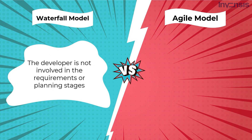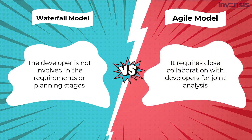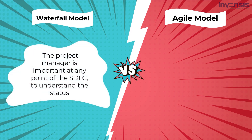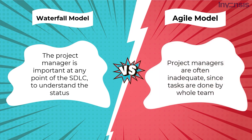The developer is not involved in the requirements or planning stages in a Waterfall model, and there are usually time delays between tests and coding. In the Agile model, it requires close collaboration with developers and joint analysis of specifications and planning. Since the process is straightforward in the Waterfall model, the project manager is important at any point of the SDLC. As a result of the Agile team's interchangeability, they perform more quickly, and project managers are often inadequate since tasks are run by the whole team.